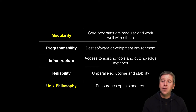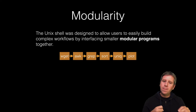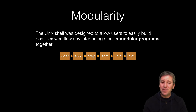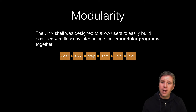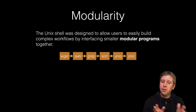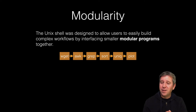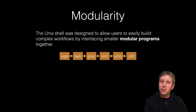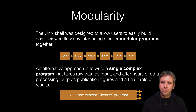The modularity of UNIX is a little more obscure but helps explain how we use UNIX productively. The UNIX shell was designed to allow users to build complex workflows or analysis pipelines by interfacing smaller modular programs together. We might run individual UNIX commands — like 'wget' to download data from a web server or database — and then pass it through other modules to do analysis, one after another.